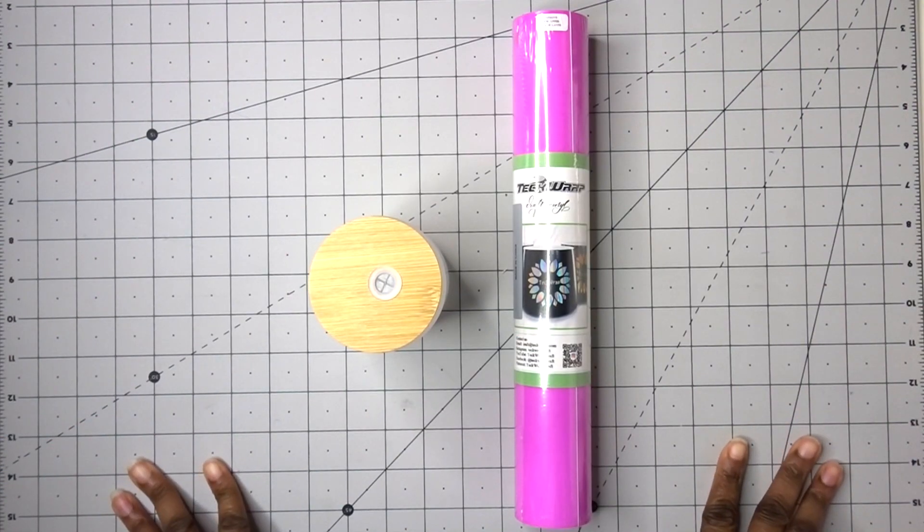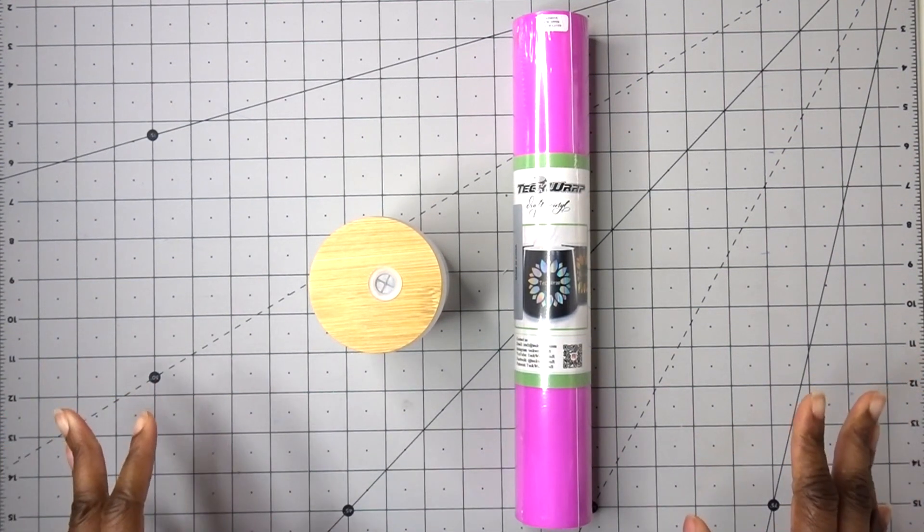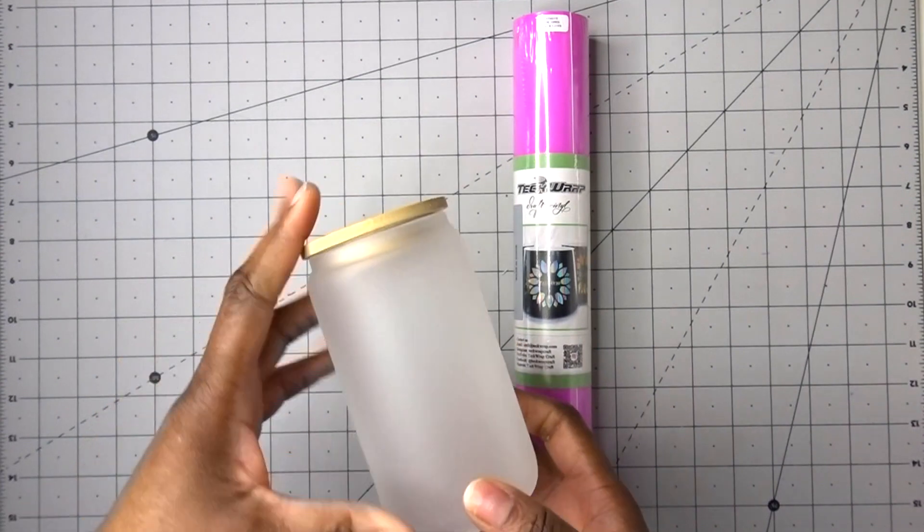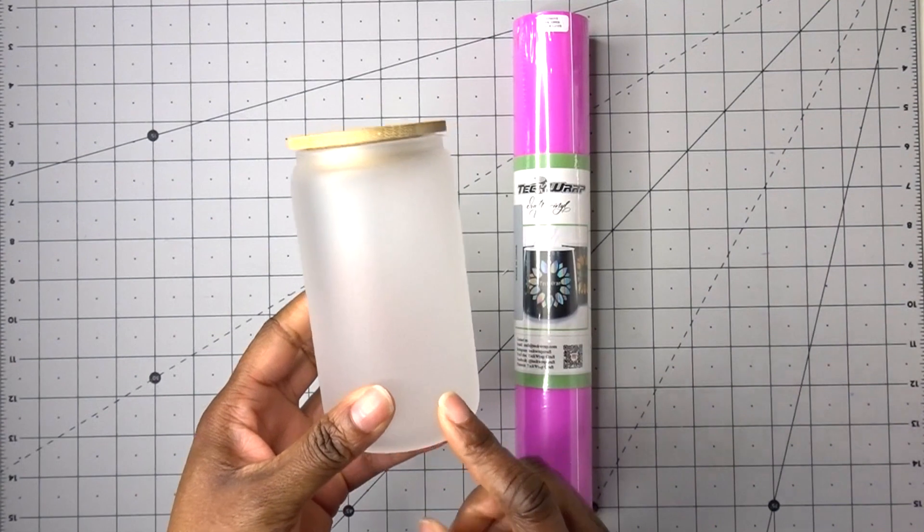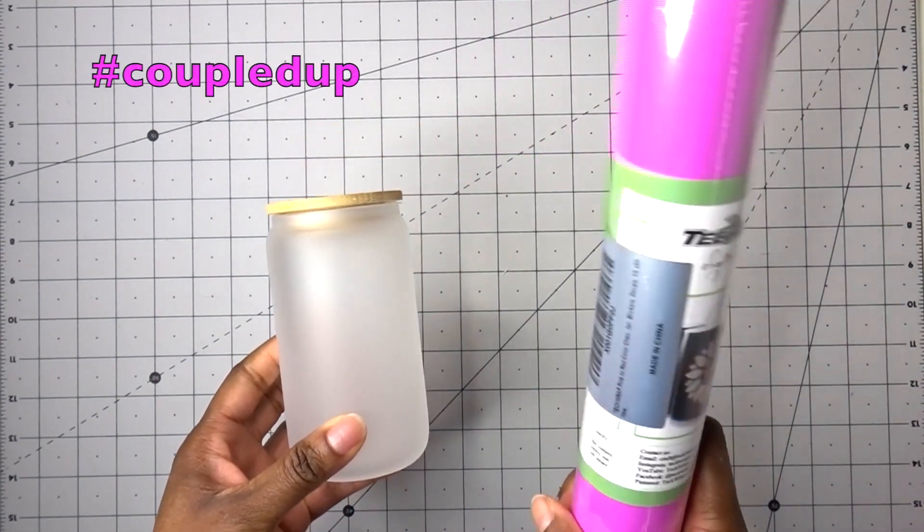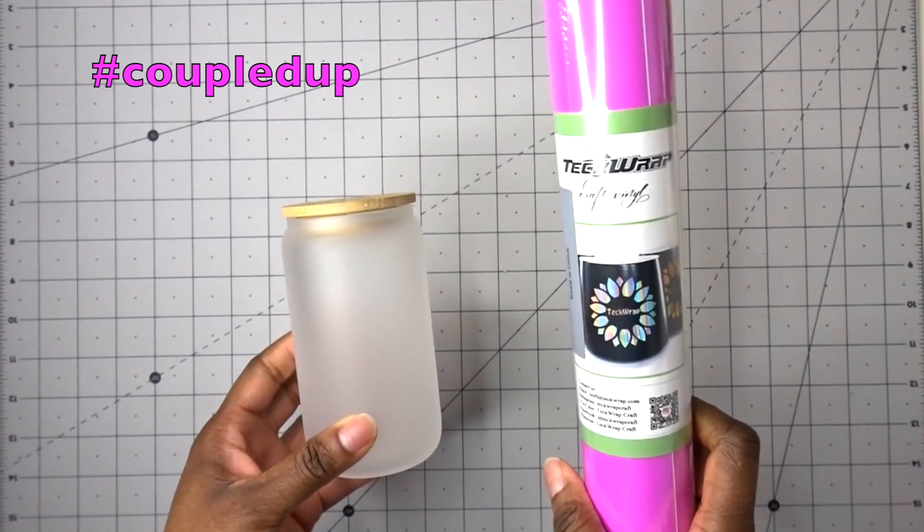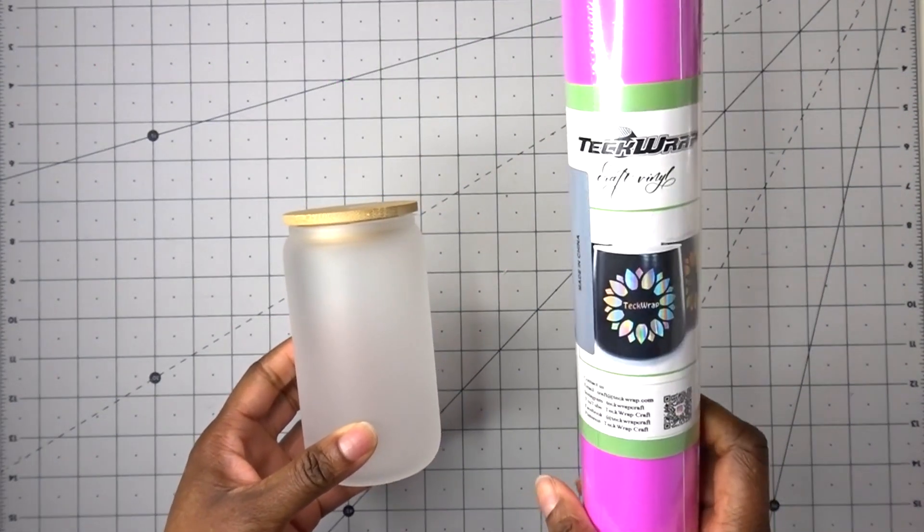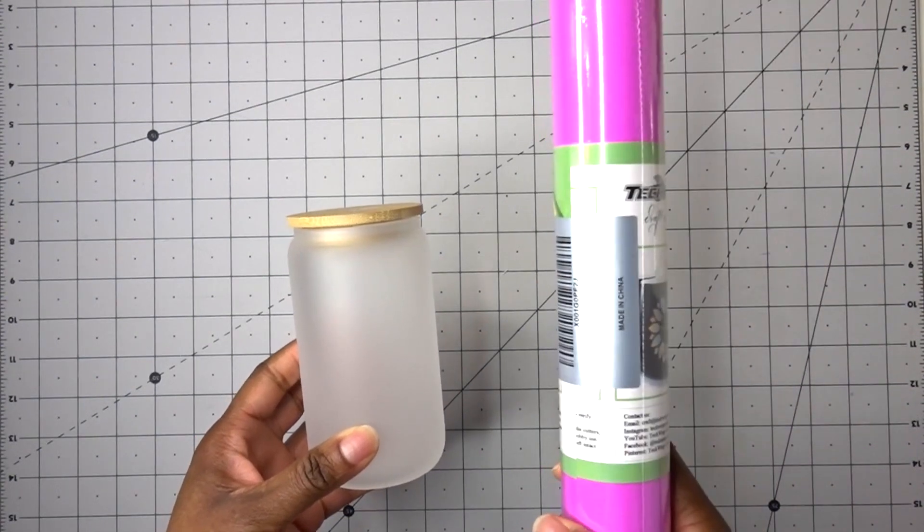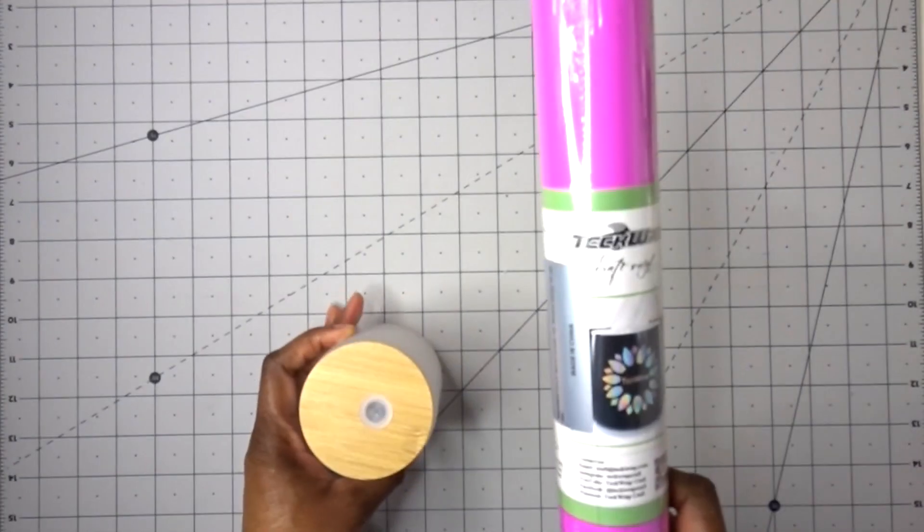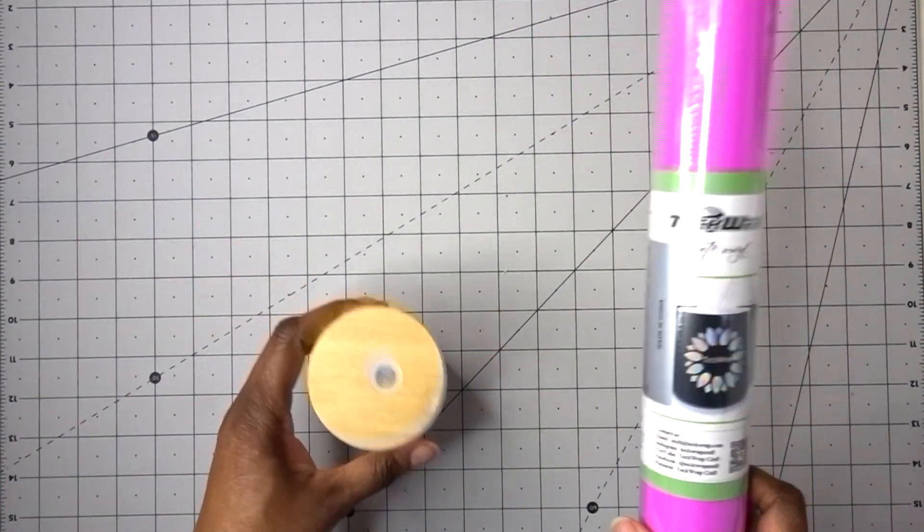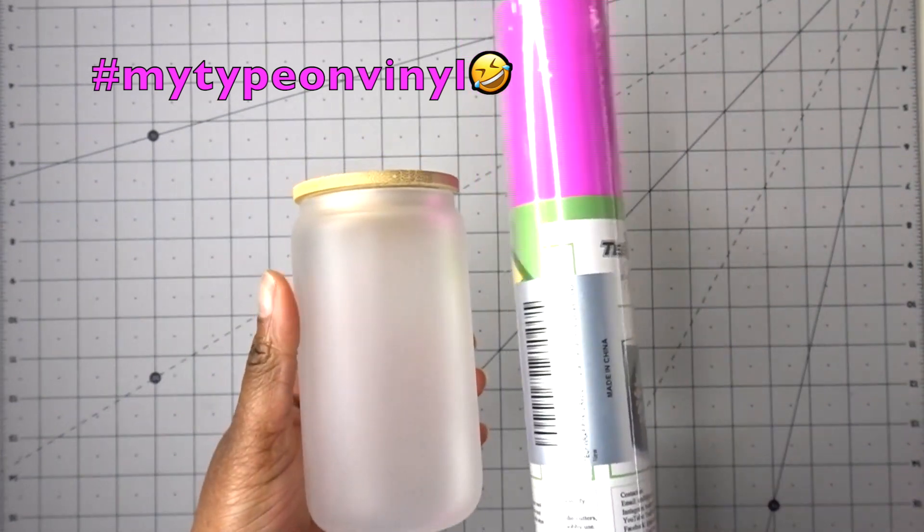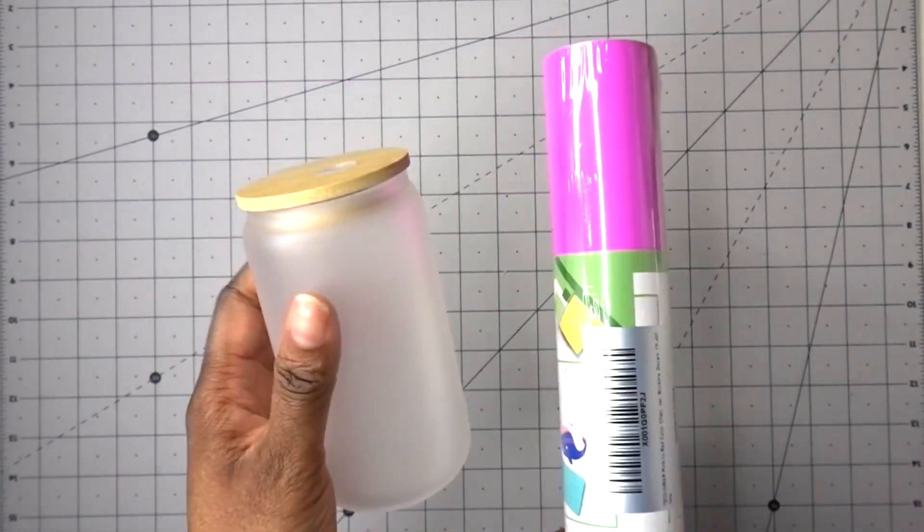Okay, so I'm going to be creating a Love Island inspired Libby glass here. I've got my Libby glass, this is a 12 ounce one, and I'm going to be coupling it up with this tech wrap color changing vinyl. This vinyl goes from pink, this hot pink, to red.